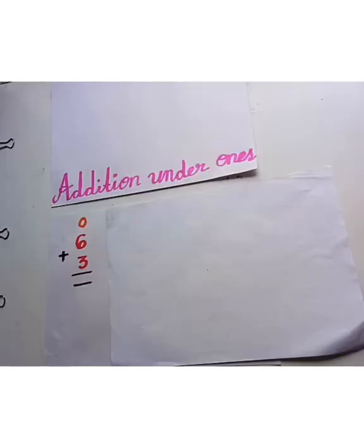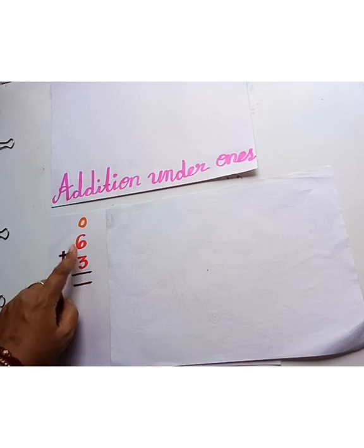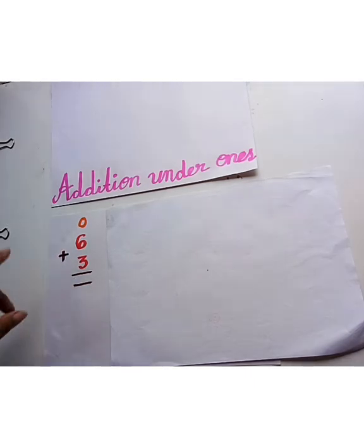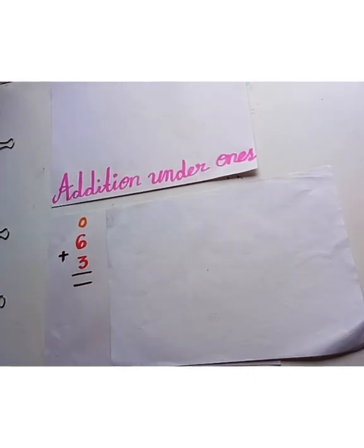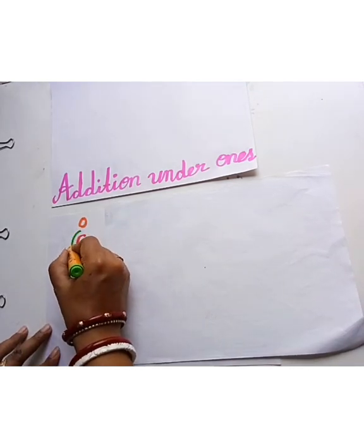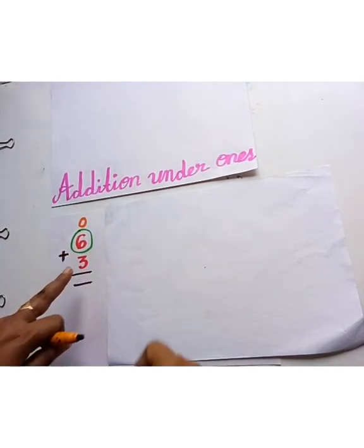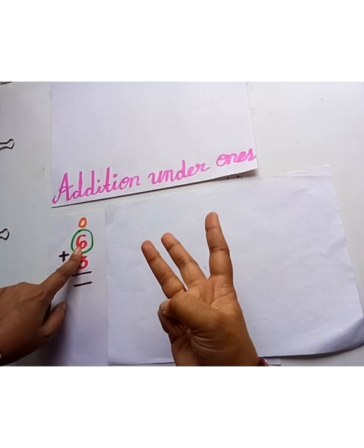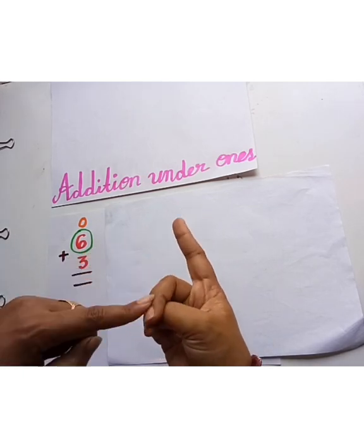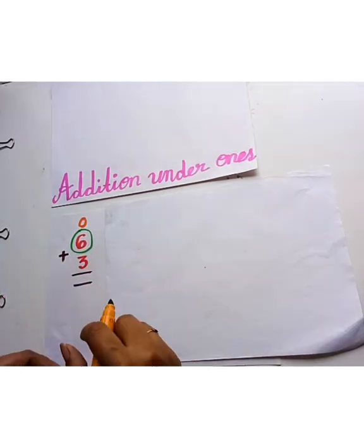Children, now let's learn addition by keeping numbers in mind. Let's learn addition in another way. Now tell me children, what's the biggest number? Yes, 6. So we will keep 6 in mind and then add 3: 6, 7, 8, 9. So the answer will be 9.